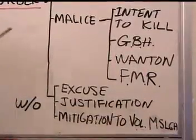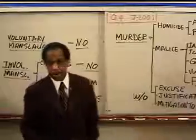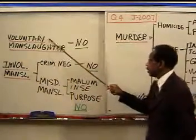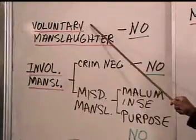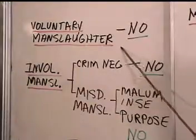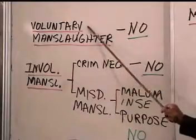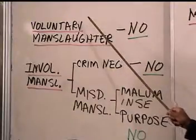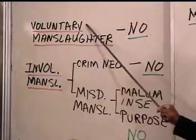Dan is not guilty of murder. They also ask about lesser included offenses — the only two are voluntary and involuntary manslaughter. Is Dan guilty of voluntary manslaughter? No — because there was no voluntariness to the killing, and furthermore we're not sure he's responsible for the death at all.